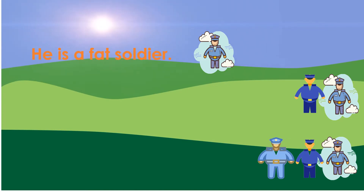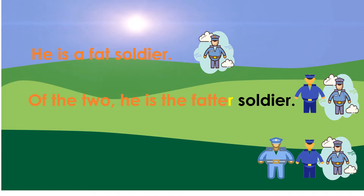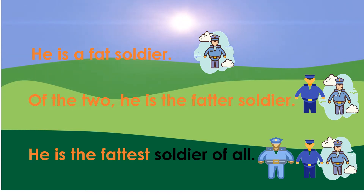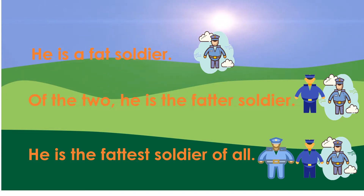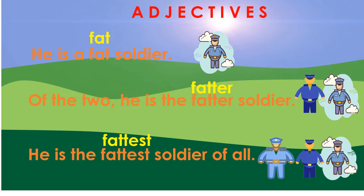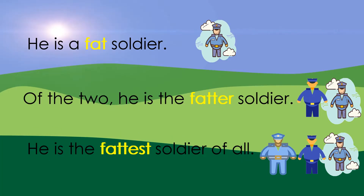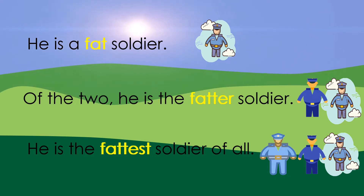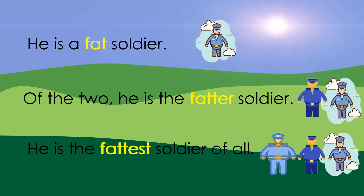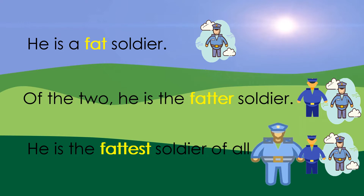He is a fat soldier. Of the two, he is the fatter soldier. He is the fattest soldier of all. In the first sentence, one soldier is described as fat. In the second sentence, two soldiers are compared, and one is fatter. In the third sentence, a number of soldiers are compared, and one is the fattest soldier of all.